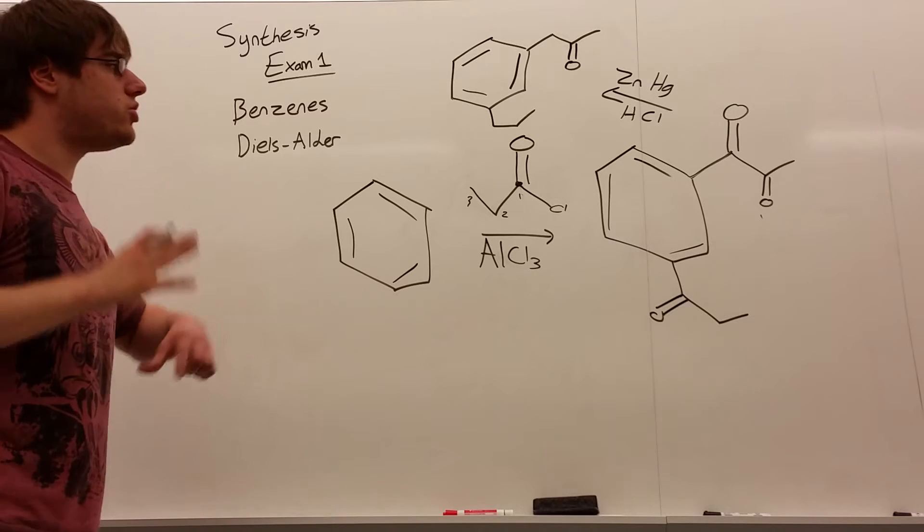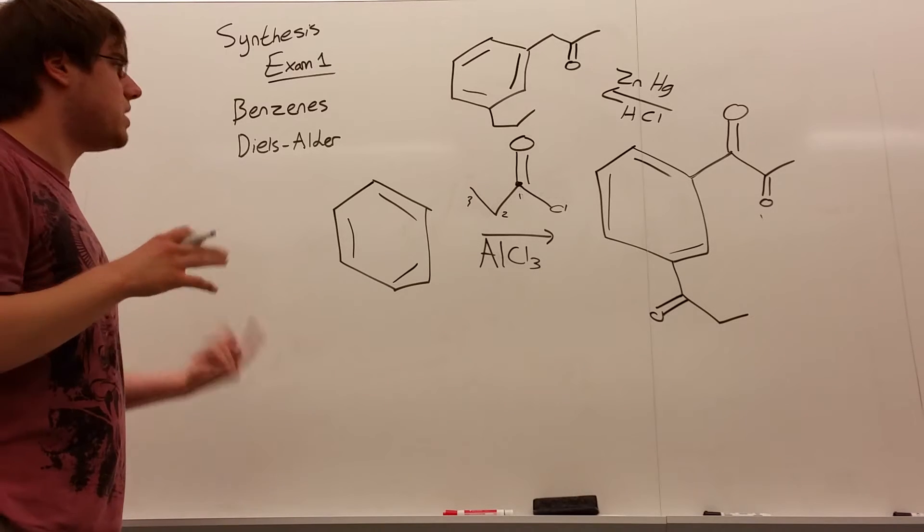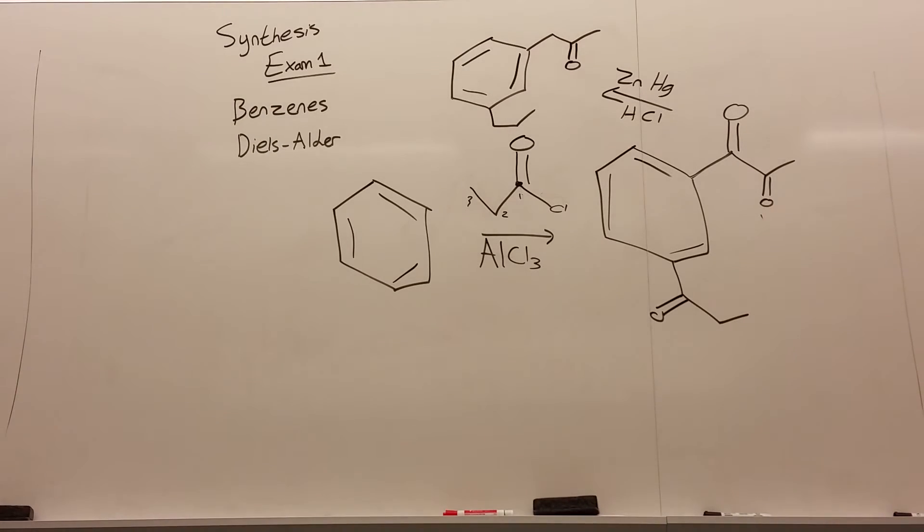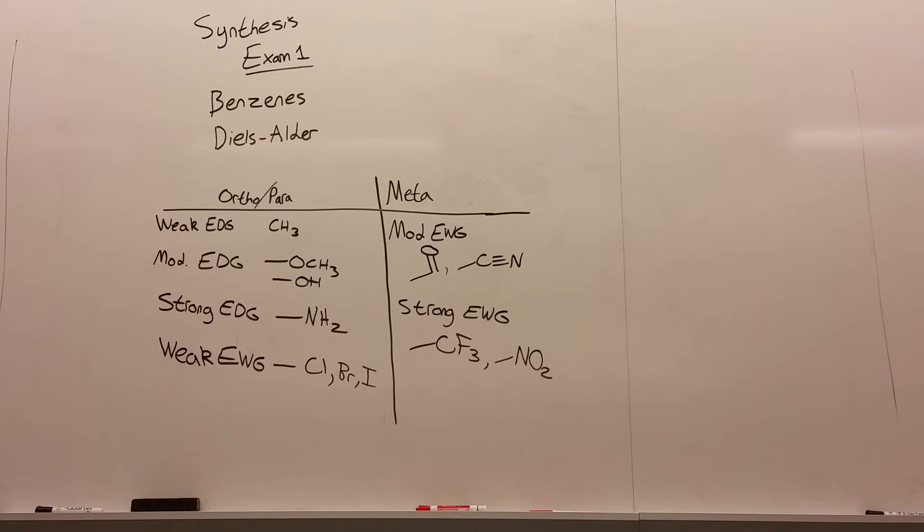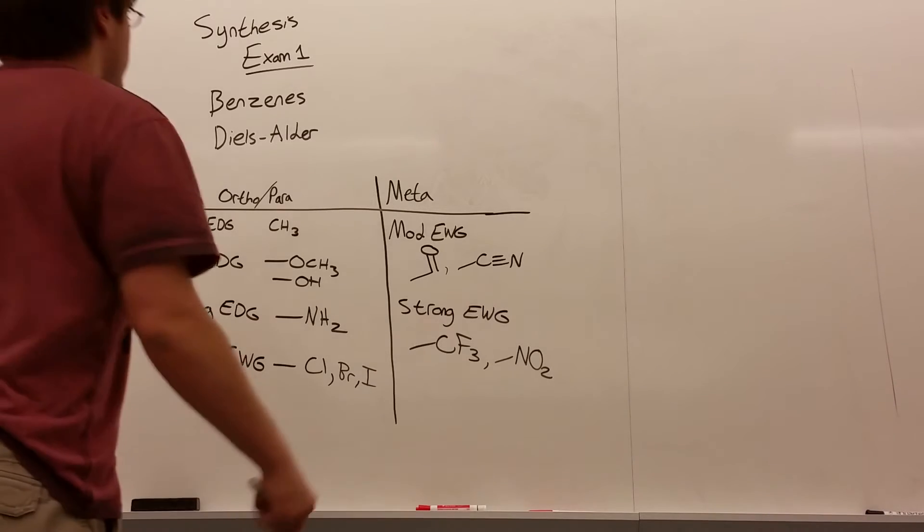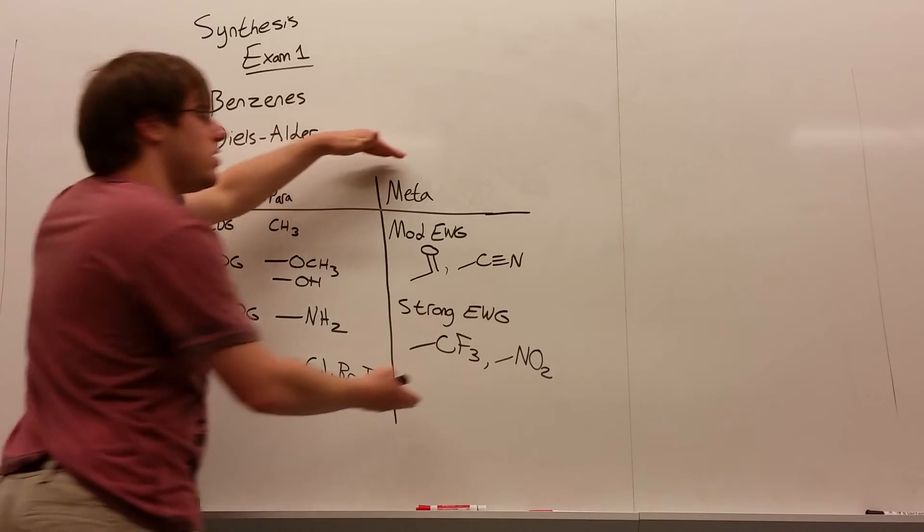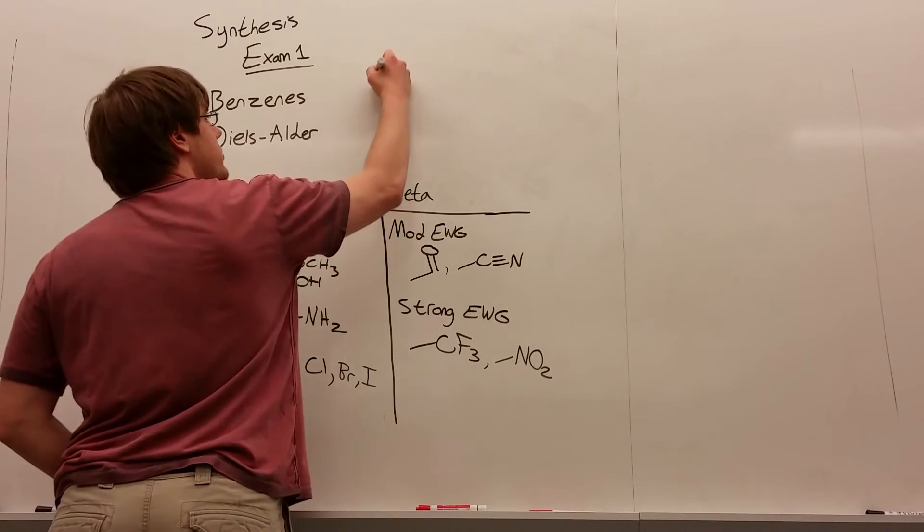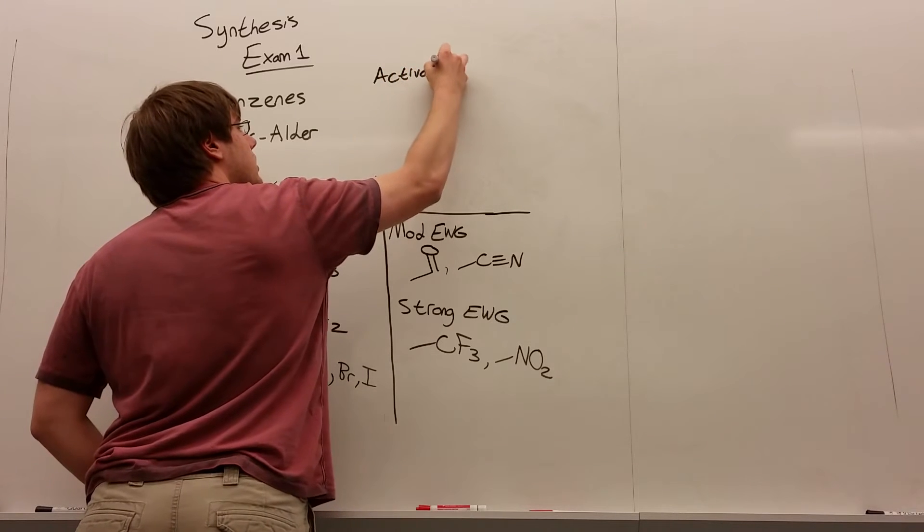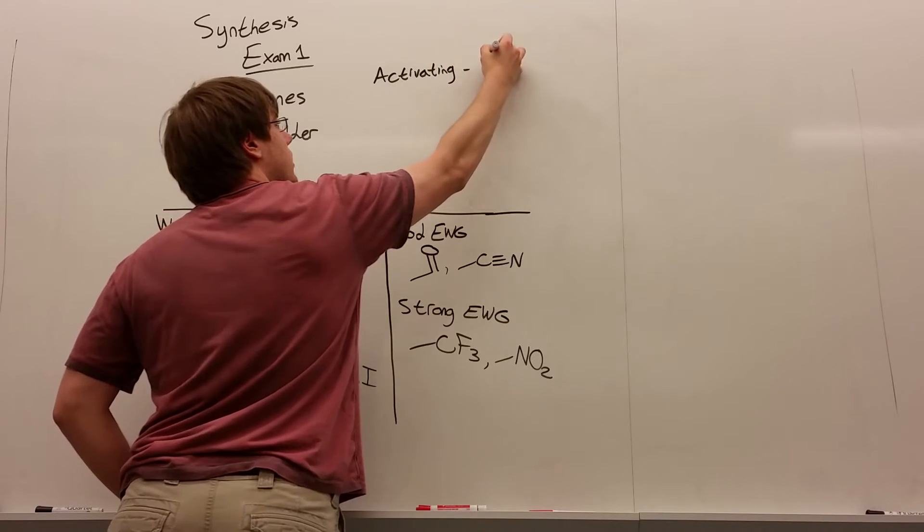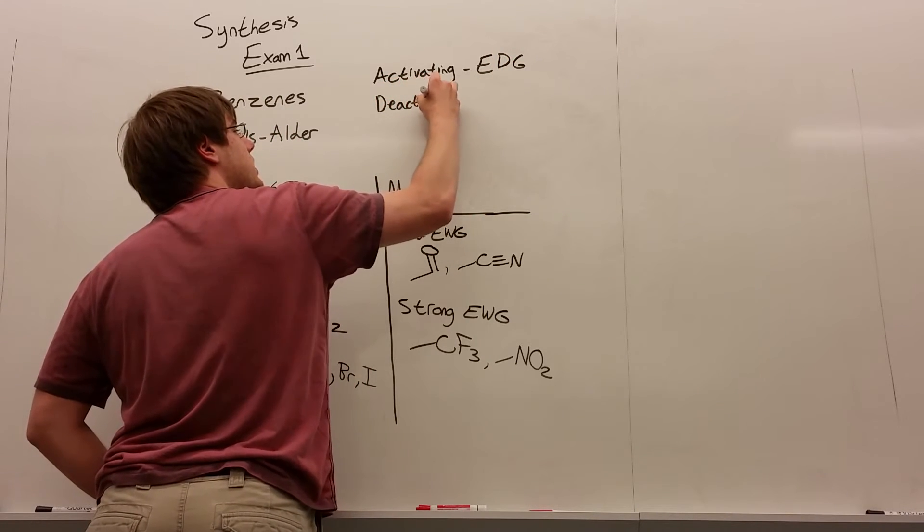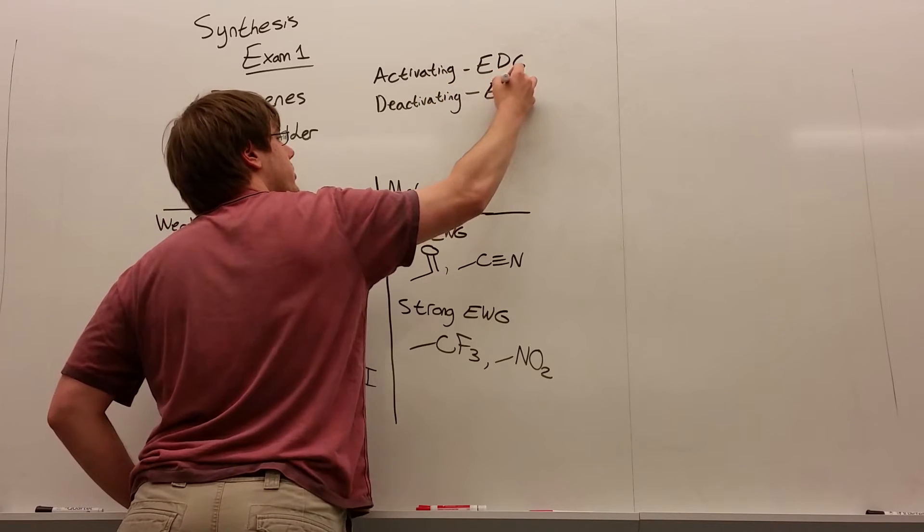So those are the general reactions that you should know that involve benzene additions. Now we're going to look at some more particulars of how these syntheses work. So on your cover sheet from exam 1, and most likely on your final list cover sheet, you're going to be given a list of ortho-para directors and meta directors, and they're going to give you words like activating and deactivating. And for now, I'm just going to say that wherever you see the word activating, that's the same thing as saying an electron donating group.